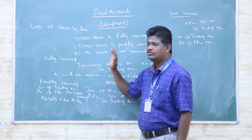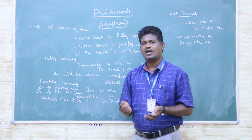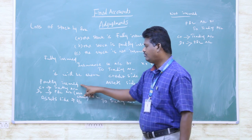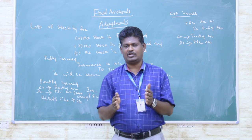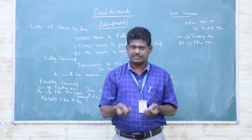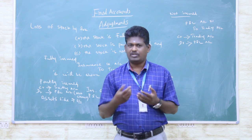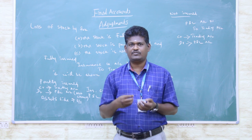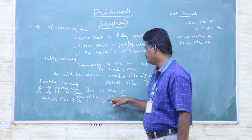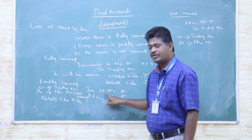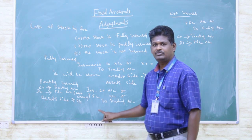If it is fully insured, 1000 rupees will be recovered. That is the adjustment. Now, partly insured: if 1500 rupees is lost but only 1000 rupees is covered by insurance, the remaining 500 rupees cannot be claimed from the insurance company. In that situation, we adjust accordingly — the insurance company account, profit and loss account, and the trading account.